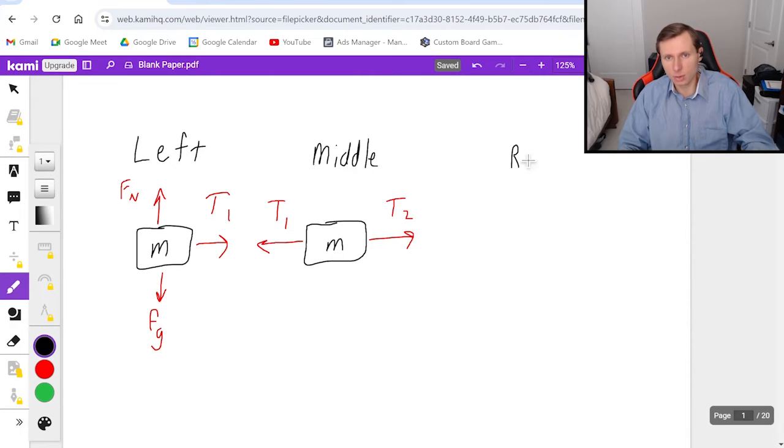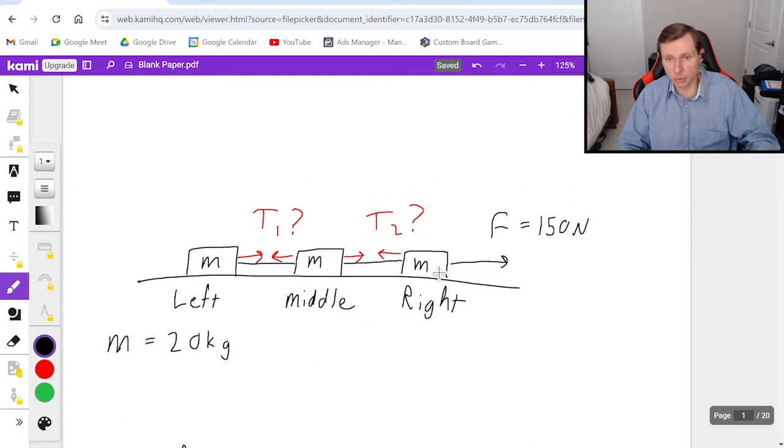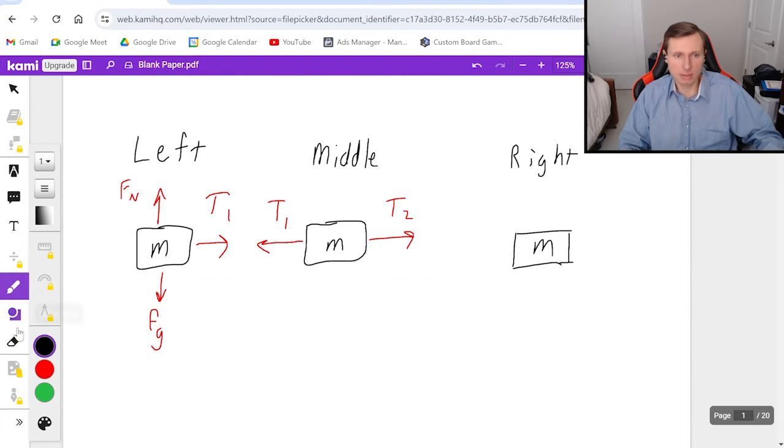And then for the right box that has mass m, once again, there's two forces acting on the right box. It's the 150 newton force pointing to the right, and then T2 now pointing to the left. Meaning, in my free body diagram, I'm going to have F or 150 newtons to the right, and then T2 pointing to the left. And that's it for step one, free body diagram.